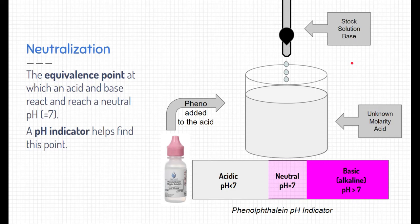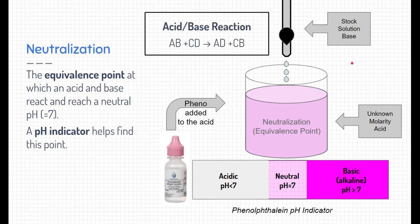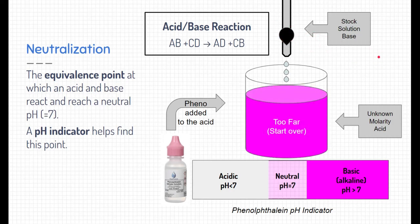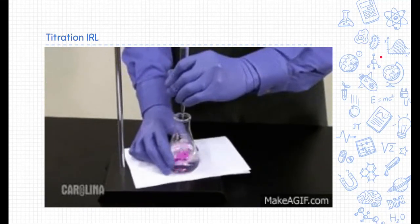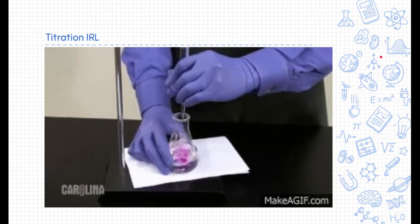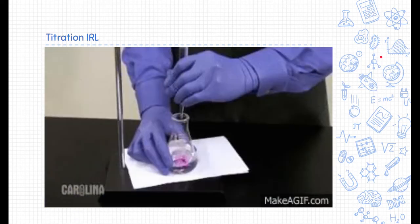Over time, when the base and acid mix, the phenolphthalein will eventually reach a neutralization point — we call this the equivalence point — and it turns a very faint pink. At this point, we've reached an acid-base reaction where the acid and base neutralize each other and create a salt and water. If we don't stop the reaction, we might go too far and have to start over. This is what a titration typically looks like in real life — a little tedious, but we're able to find that equivalence point.